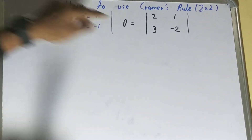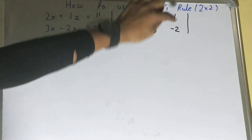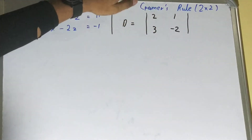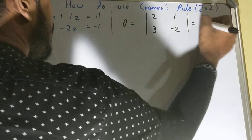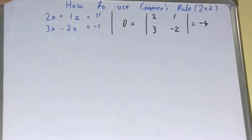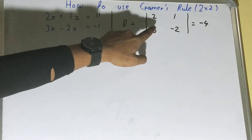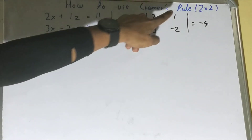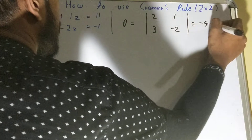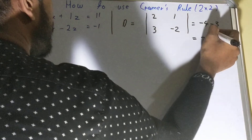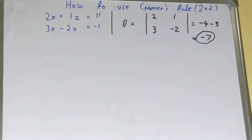Finding the determinant is easy. We take the value of the main diagonal and subtract the other diagonal. So 2 times minus 2 gives minus 4, and we subtract 3 times 1 which is 3, giving minus 4 minus 3 equals minus 7. So the determinant is minus 7 — half of our work is done!